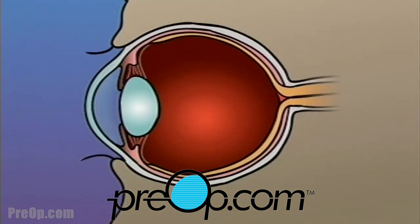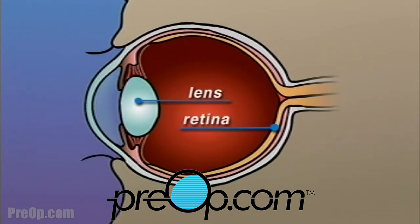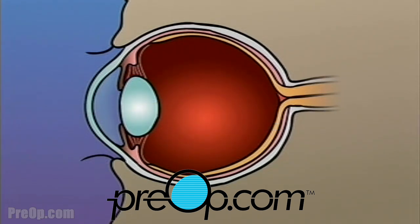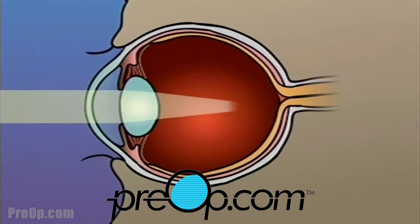The human eye is constructed like a camera, with a clear lens in the front and light-sensitive tissue at the rear. This tissue makes up the retina, which acts like photographic film. In an eye that has perfect vision, light rays passing through the pupil are focused by the lens to fall precisely at the center of the retina.